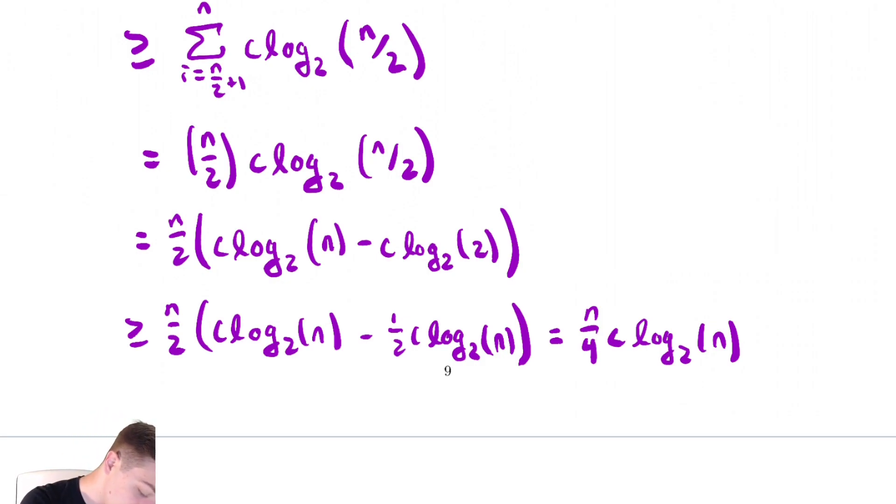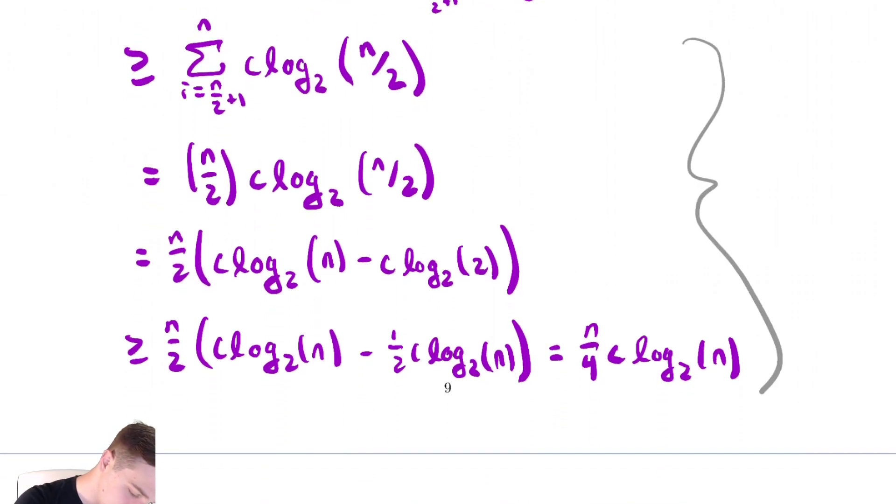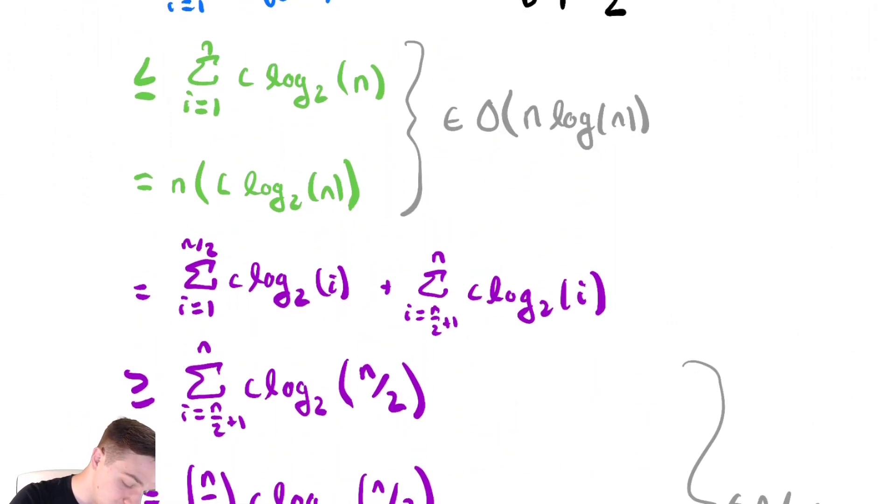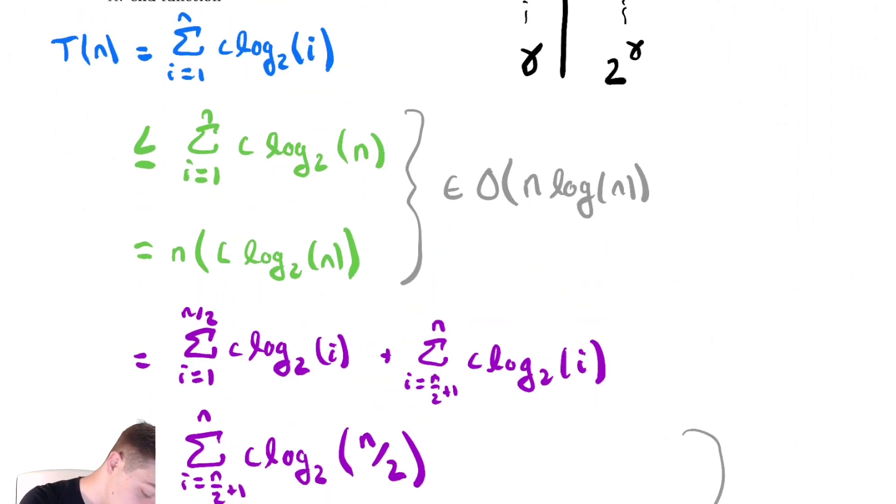So, all of this stuff down here, all the purple stuff, claims that it is in big omega of n log n. And if we scroll up, it was also in big O of that, so I guess off to the side here so we can finish it up on this sheet of paper.